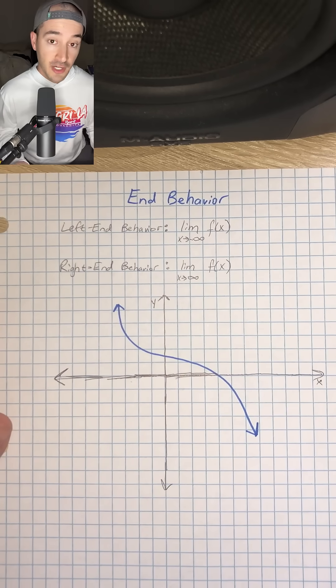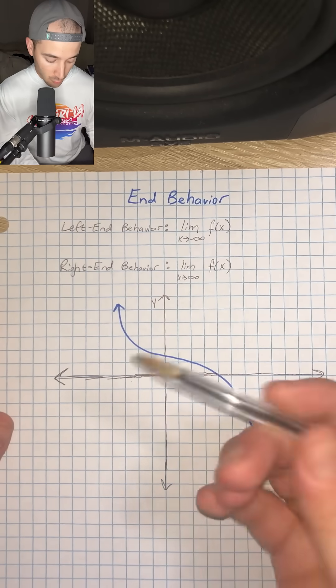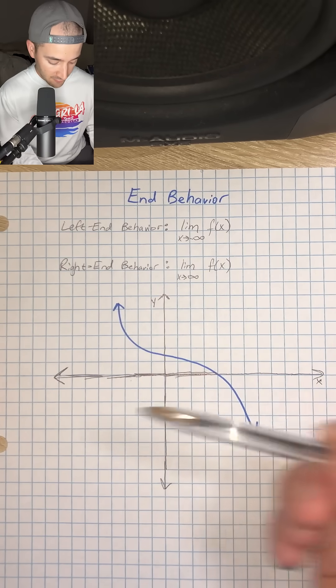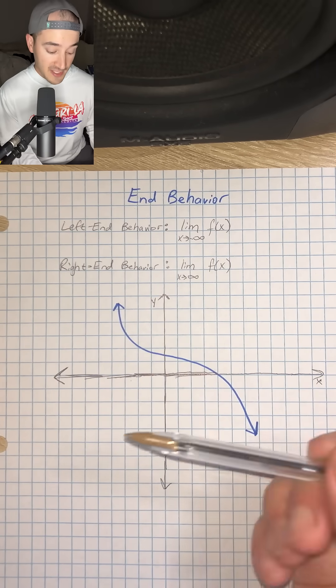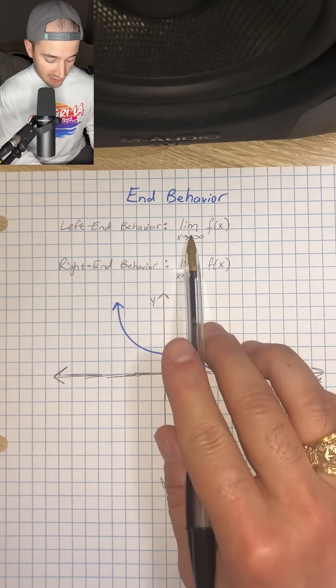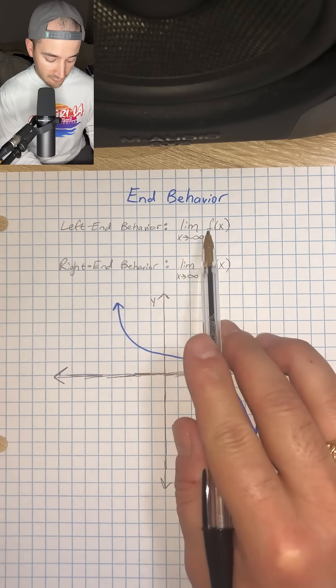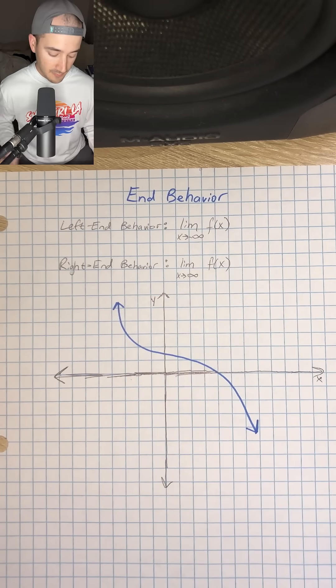So the way that we can describe our left end behavior, or as x approaches negative infinity, would be like this. We would say the limit as x approaches negative infinity of f of x is such and such.